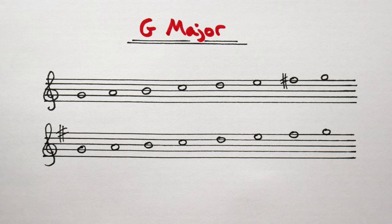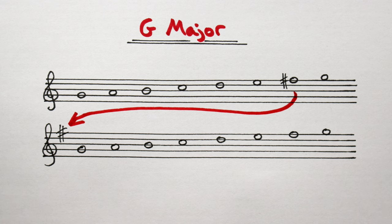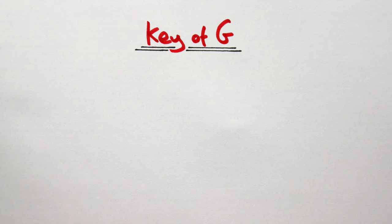In the last example, I've pulled out the accidental and put it at the beginning of the tune. Similarly, we can write a tune in the key of G major in two ways. Like this.